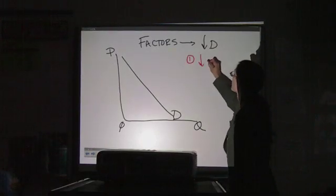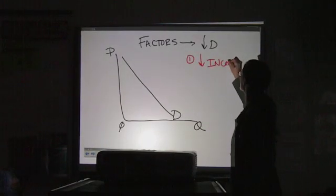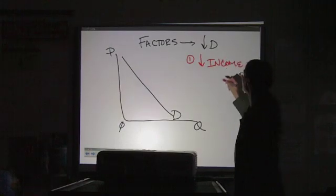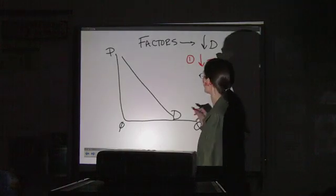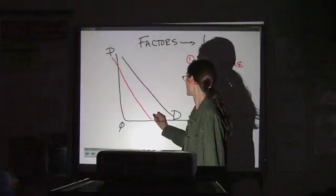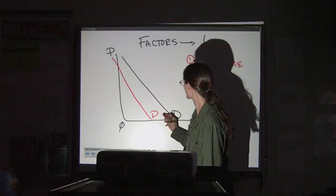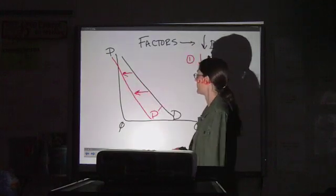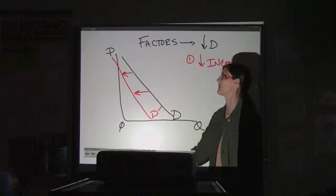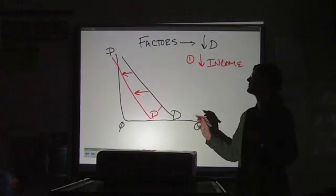Number one, a decrease in income. Again, we're talking about normal goods, because most products are normal for most people. And if we're decreasing demand, we are picking the curve up. Sorry, that should be parallel. It's a little bit off. Picking the curve up and sliding it left toward zero. So a decrease in income is the first one.